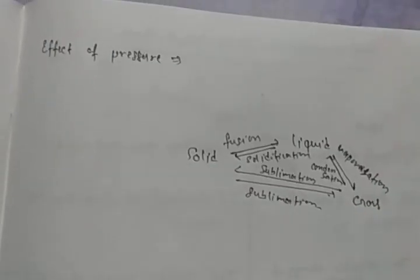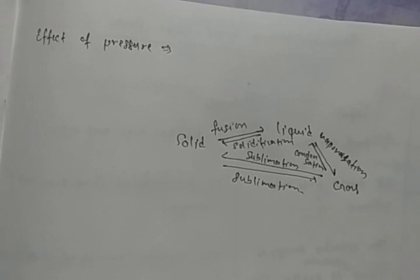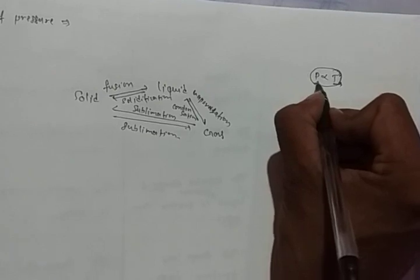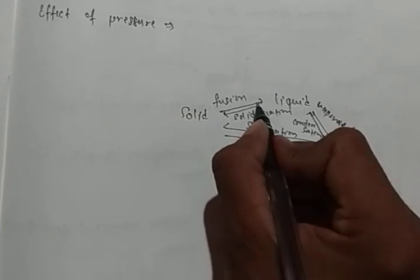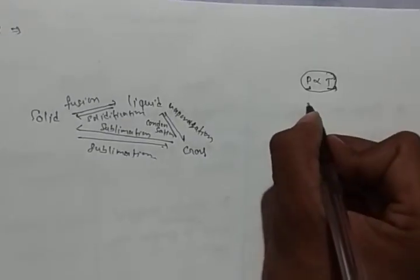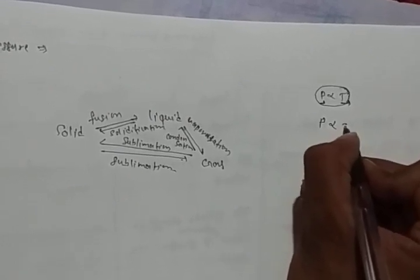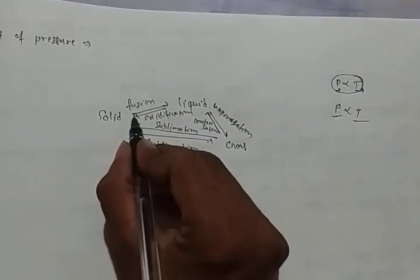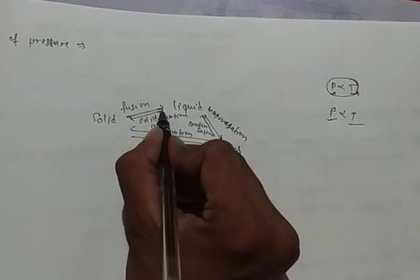When we increase the pressure, pressure is proportional to temperature. When we increase the temperature, the pressure will also increase. When we increase the pressure, the temperature will increase. And when the temperature increases, the matter can change to liquid form.